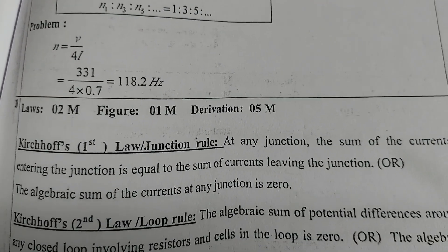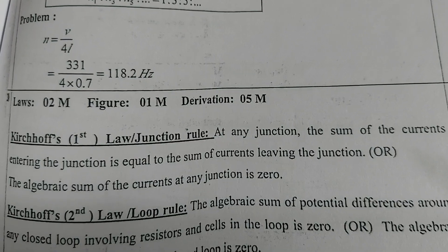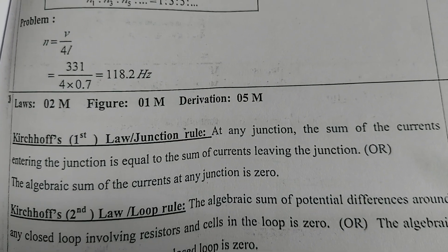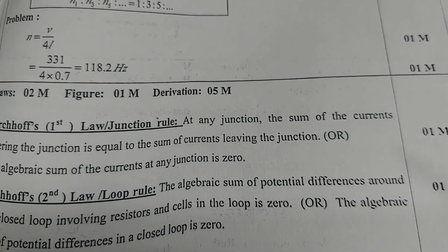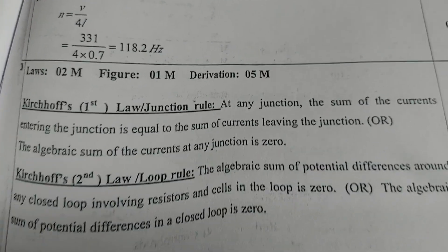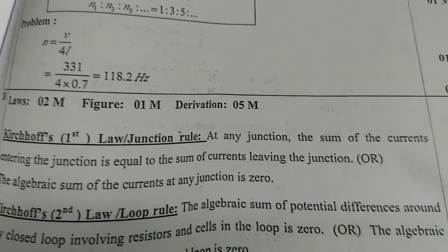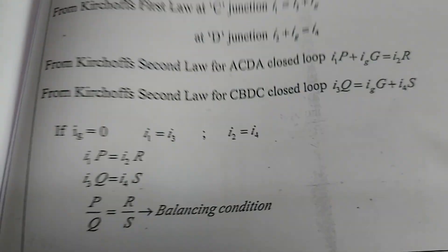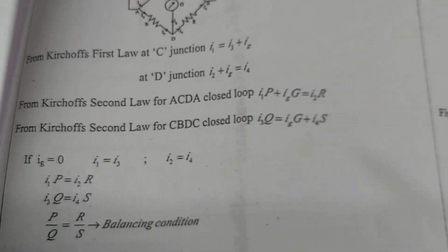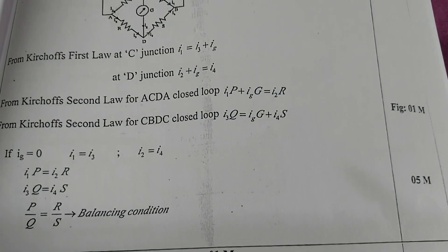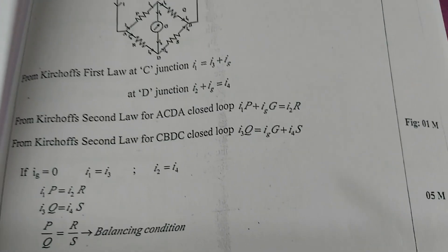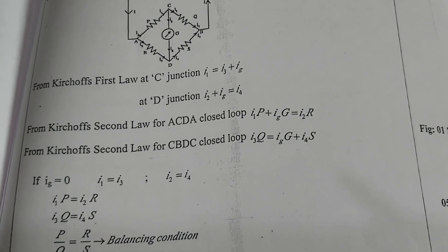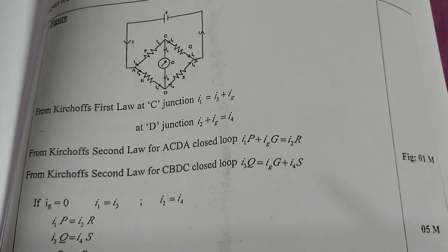Next question: Kirchhoff's laws — two marks for the laws. Figure one mark, derivation five marks. First law and second law. Diagram one mark, derivation five marks — five plus one equals six, plus two marks for the laws equals eight marks total. This is the division mentioned.